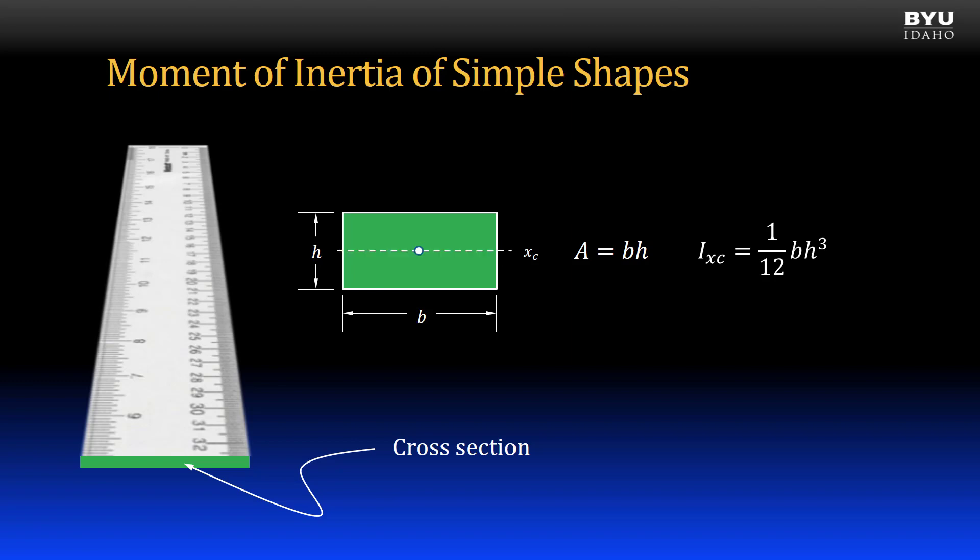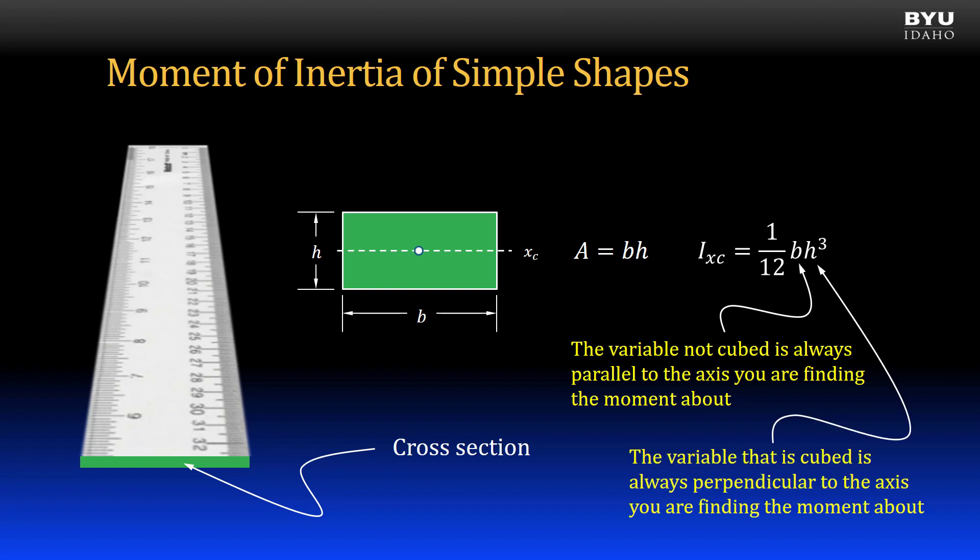This means that the x-axis passes through the centroid. So, this moment of inertia equation is for the moment of inertia about the centroidal axis in the x-direction. Now, like cross-sectional area, the only variables are base and height. Unlike area, it matters which dimension is the base and which is the height, since the height gets cubed. Here is a rule. The base, or the variable that is not cubed, is always parallel to the axis you are finding the moment about. In this case, the x-axis. That means that the variable that gets cubed, here the h, is perpendicular to the axis you are finding the moment about. Let's look at how changing the direction of the axis changes the value of the moment of inertia.